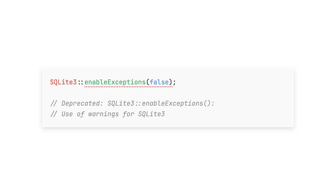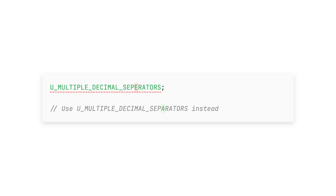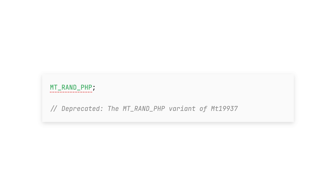A pretty big future change in the PHP SQLite library is that warnings will be replaced with exceptions. Right now there's a function called enable_exceptions that accepts false so that you can disable SQLite exceptions altogether — well, that's deprecated now, all in preparation for PHP 9. Finally, some older constants have been deprecated as well.